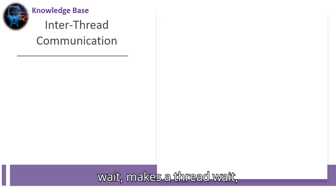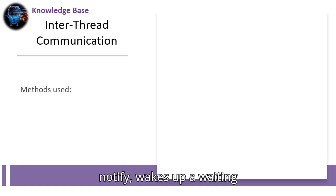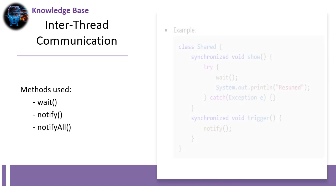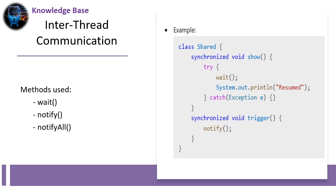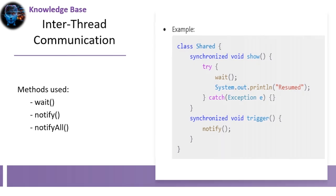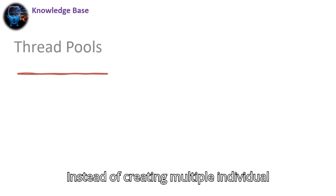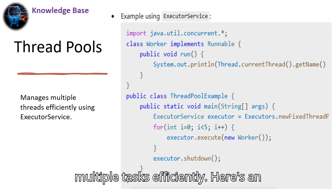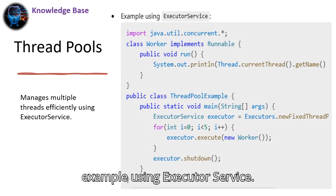Threads can communicate using: wait() — makes a thread wait; notify() — wakes up a waiting thread; notifyAll() — wakes up all waiting threads. Instead of creating multiple individual threads, we use thread pools to manage multiple tasks efficiently. Here's an example using ExecutorService.